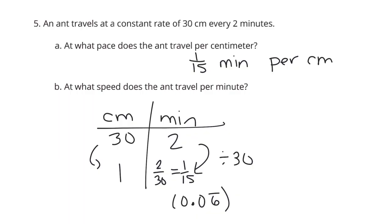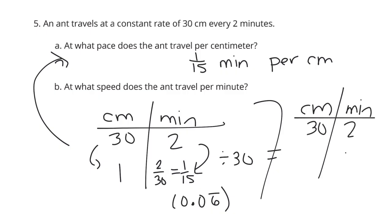Now, that was for A. And B, at what speed does the ant travel per minute? Centimeters, minutes again, 30 centimeters in two minutes. This time, we're going to one minute. And this is the easier question, perhaps, because as you go, how do I get from 2 to 1? I'm dividing by 2. So, 30 divided by 2 is 15. So, we're looking at 15 centimeters per minute. 1 fifteenth and 15. Those are almost reciprocals.